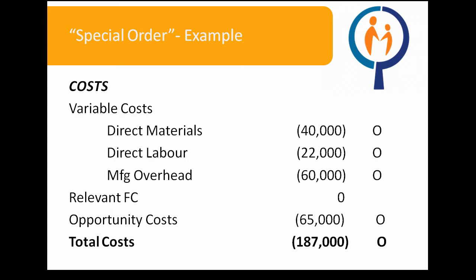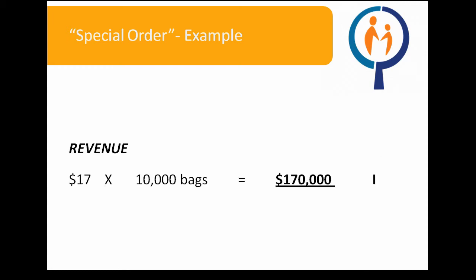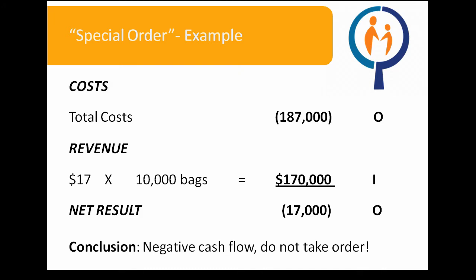Adding up the variable costs, relevant fixed costs, and opportunity costs, we obtain a total cost value of $187,000 — the outflow of cash necessary if we accept this special order. The flip side is that we will receive $17 per bag for 10,000 bags, for revenues of $170,000. Comparing this to the cost of $187,000, we find an overall net result of negative $17,000. Since the net result is negative, we should reject the special order.